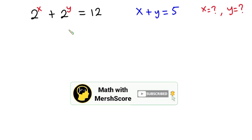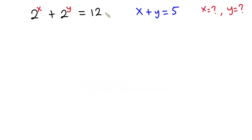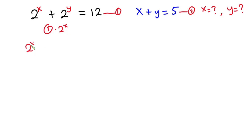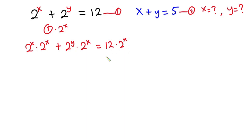Now let's get started. I'm going to call this equation 1, and I'll call this equation 2. Now let's go ahead and multiply everybody in equation 1 by 2 to the power x. So we have 2 to the power x times 2 to the power x, plus 2 to the power y times 2 to the power x, and this is equal to 12 times 2 to the power x.